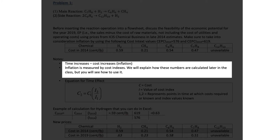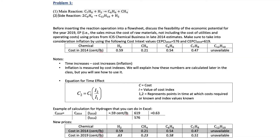Inflation is measured by the cost index. There are multiple cost index factors you can use; the one we're using is the chemical plant cost index — the CEPCI values. The equation that relates the current cost to a past cost uses the corresponding indexes: C₂ = C₁ × (I₂/I₁), where C is cost and I is the cost index value. For us, cost number two corresponds to 2019 and cost number one to the given value in 2014.